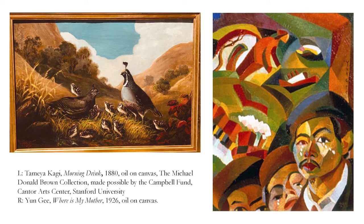Or, on the right, 'Where is My Mother' by Yanji — a paper son, someone who came into the United States on forged documentation during the Chinese Exclusion Act — also studying in Paris, clearly showing a cubist visual culture, but using cubism to think about the history of the railroad and diasporic movement. This fracturing of form isn't just a formal experiment, but has to do with diasporic memory and a suturing of history and geography together.